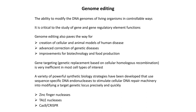Prior to genome editing, a method called gene targeting was used to modify genomes. This describes genetic replacement based on cellular homologous recombination machinery. It's used in yeast a great deal and can be used in mammalian embryonic stem cells and B cells. But in general, it's very inefficient in most cell types of interest, so gene targeting is simply not useful in most situations.